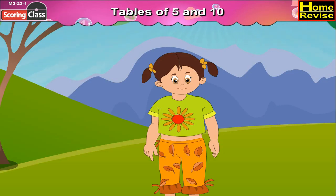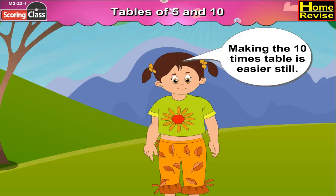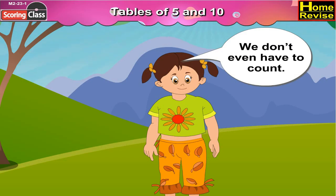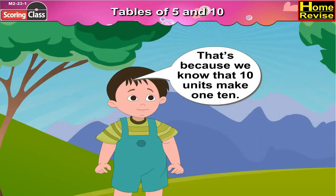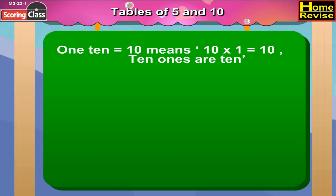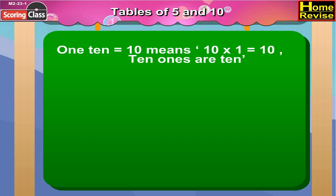Sonu says, 'Making the ten times table is easier still — we don't even have to count.' Nandu says, 'Yes, that's because we know that ten units make one ten.' Now kids, one ten is equal to ten, which means ten multiply by one is equal to ten. Ten ones are ten.